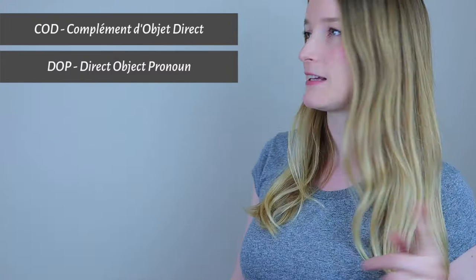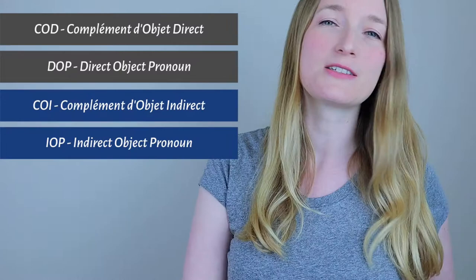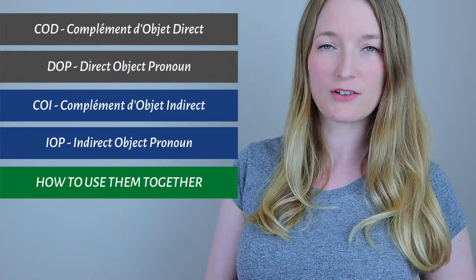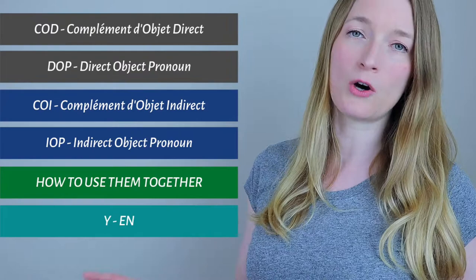Today we keep going with the subject of COD and COI — complément d'objet direct and complément d'objet indirect. Two weeks ago we saw the COD and the DOP, the direct object pronoun. Last week we saw the COI and the IOP, indirect object pronoun. This week we are going to see how to use them together, and next week we are going to see how to use Y and EN. The playlist for all the videos related to it will be in the description box.